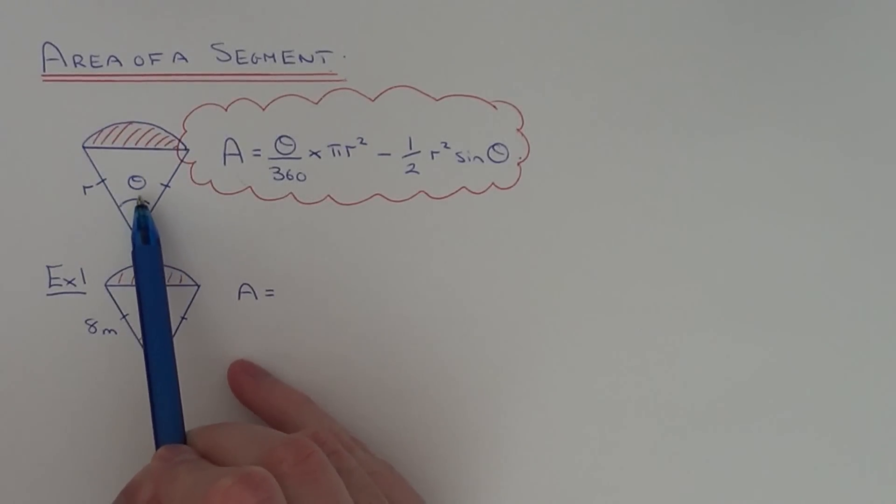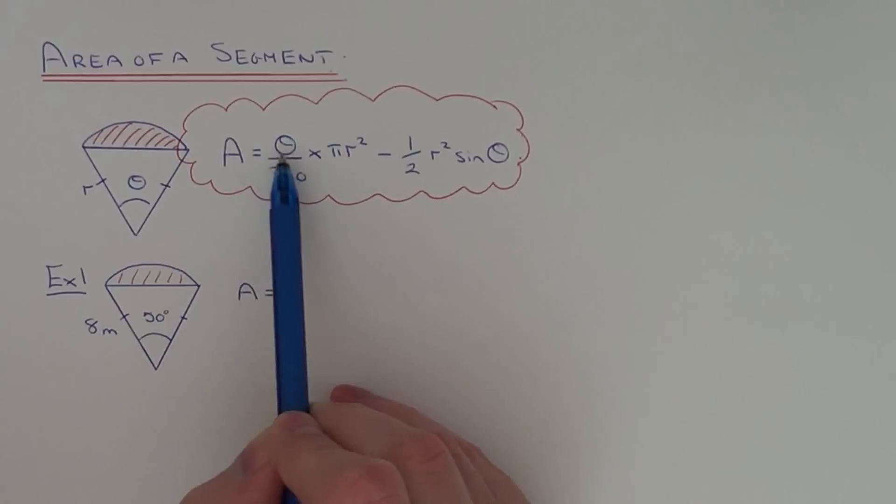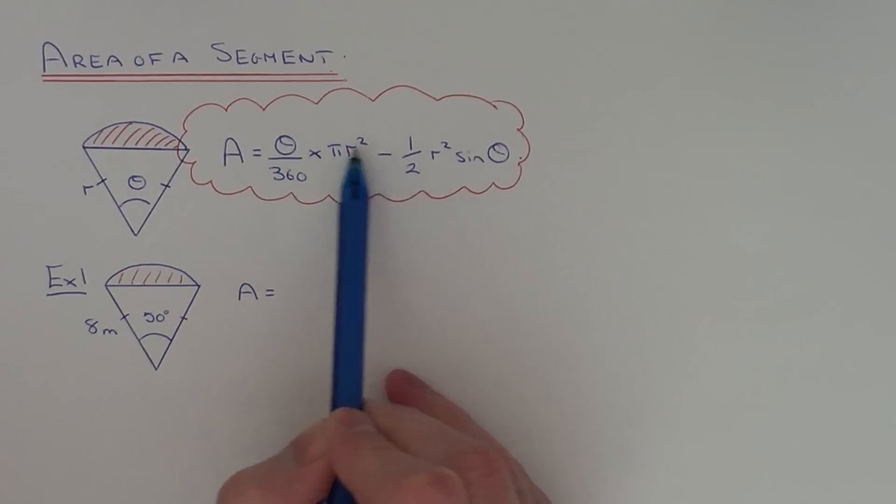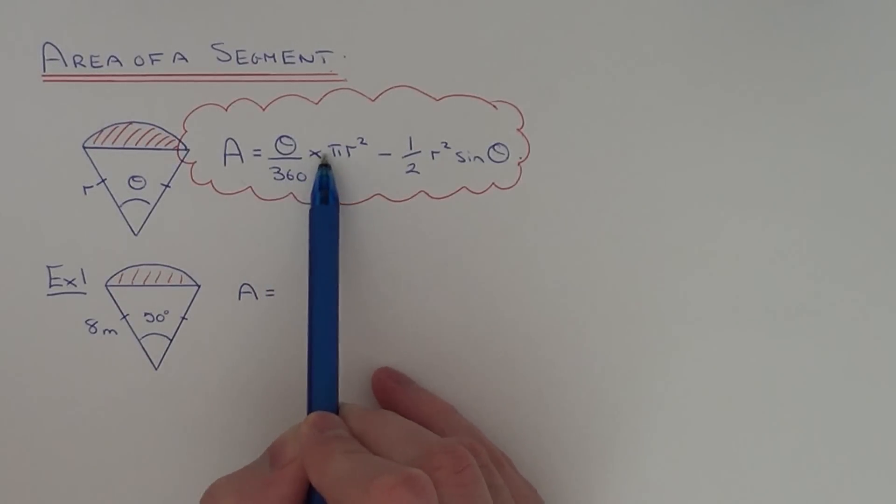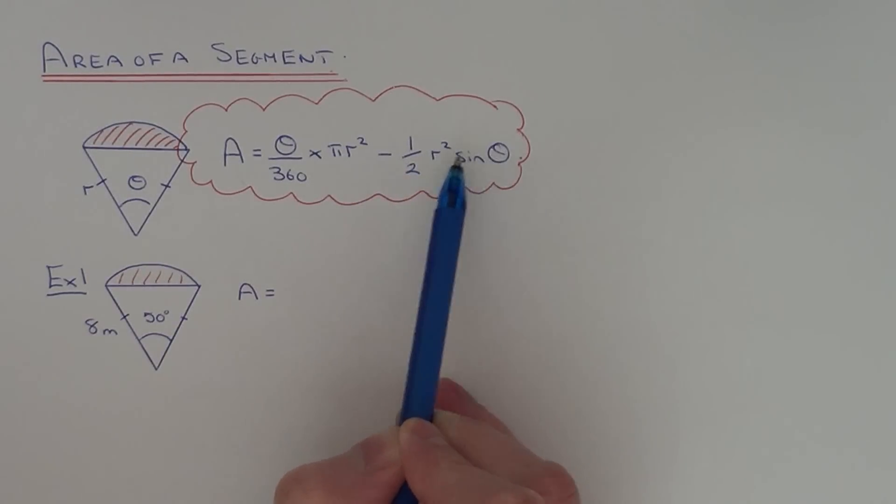So to do this you just need to know the angle theta and the radius r. And to do it just substitute these values into this formula here. Theta over 360 times pi r squared minus a half r squared sin theta.